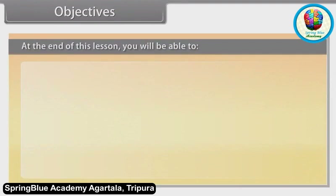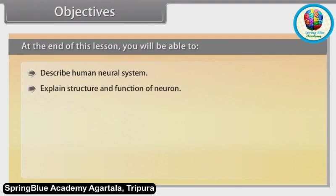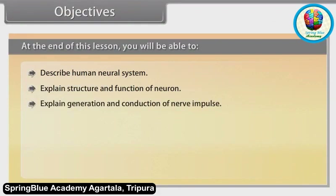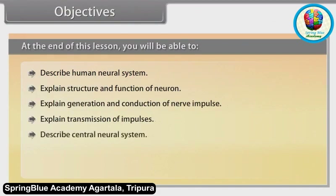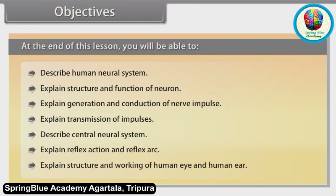At the end of this lesson, you will be able to: describe the human neural system; explain structure and functions of a neuron; explain generation and conduction of nerve impulse; explain transmission of impulses; describe the central neural system; explain reflex action and reflex arc; and explain the structure and working of the human eye and human ear.